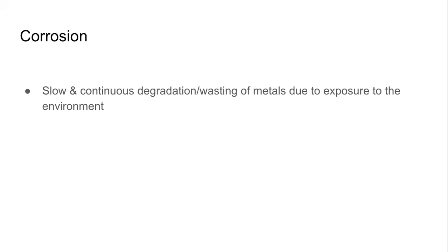Corrosion happens because when the metal is exposed to the environment. It is a slow, continuous process in which the metal degrades — the metal wastes — when it comes in contact with the environment. This is a very simple one-line definition. Key words: degradation, wasting, breaking, slow, continuous.